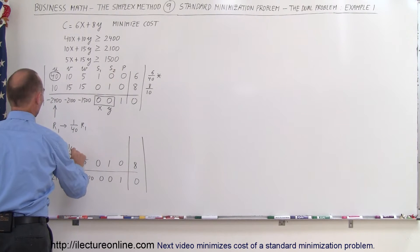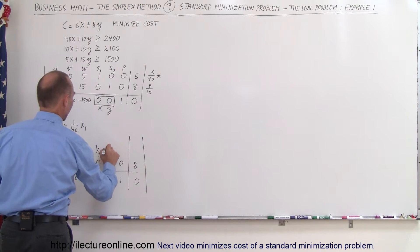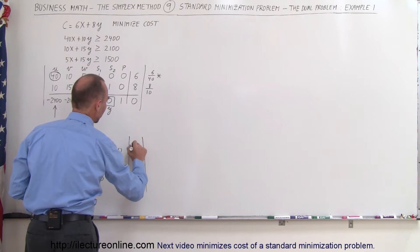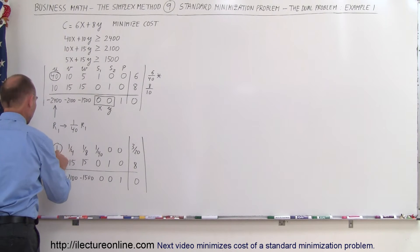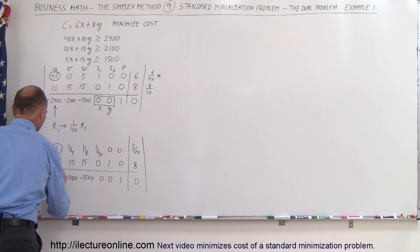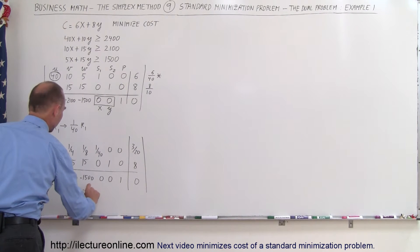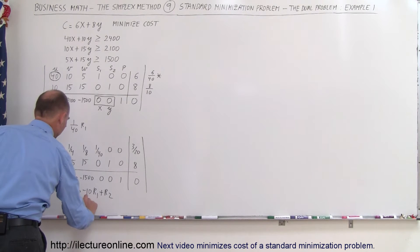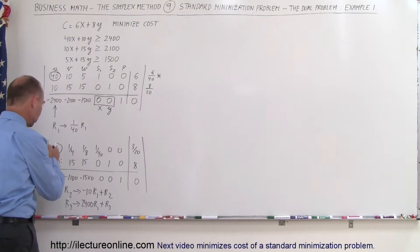10 divided by 40 is 1/4. 5 divided by 40 is 1/8. We have 1/40, 0, 0, and 6 divided by 40, which is 3 divided by 20. Now we're going to take this 1 and use it to turn the corresponding entries in the other rows into zeros. I'm going to take the second row and replace it by the negative of that number times the row with the 1 in it, which is row 1, and add it to row 2. Then take the third row and replace it by the negative of that number — positive 2400 — times the row with the 1 in it, and add it to the third row.